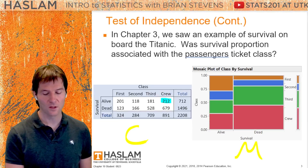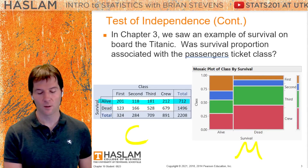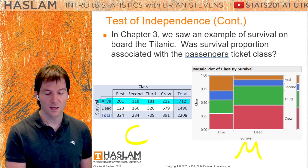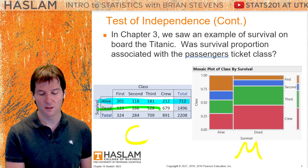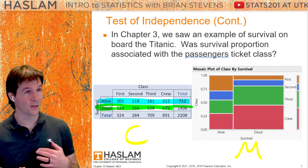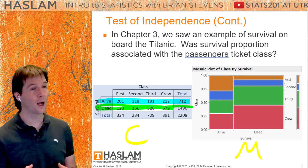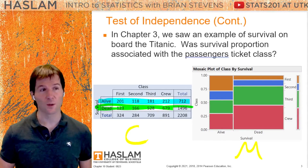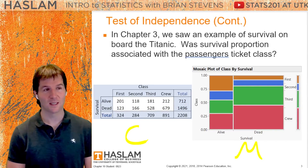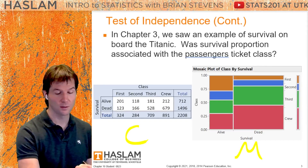We have inside of here a cell. We are specifically looking at comparing conditional distributions — to see if someone was in the crew, would they be more or less likely to be alive or dead? Or if they were in first or second class? Or if they were alive, were they more likely to be in first, second, third class, or crew? What I really like about this idea is it's really easy to write the null and alternative.